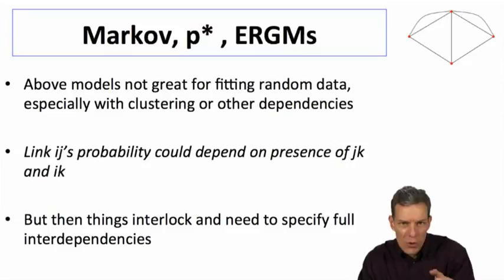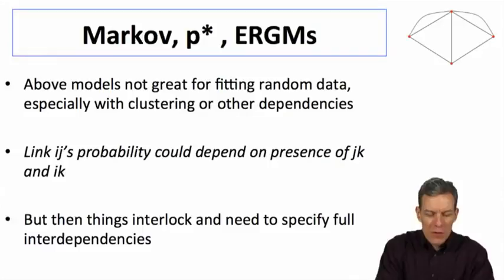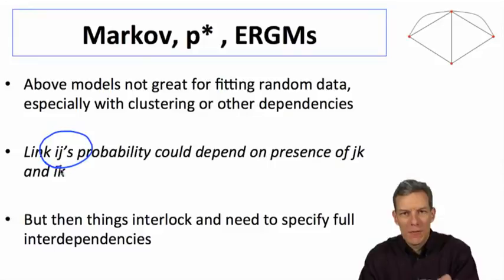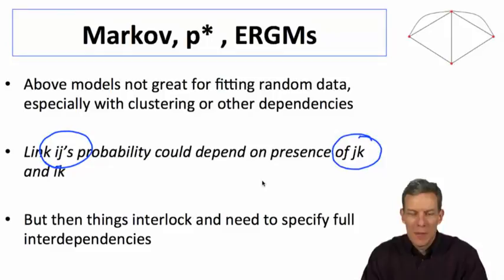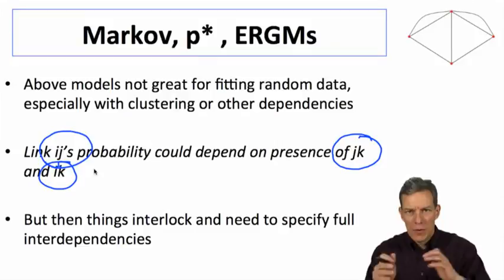What we want to allow is that for a given link ij, the probability of that link forming depends on things like whether they have a friend in common. Are j and i both related to k? So can we form triangles in that way?